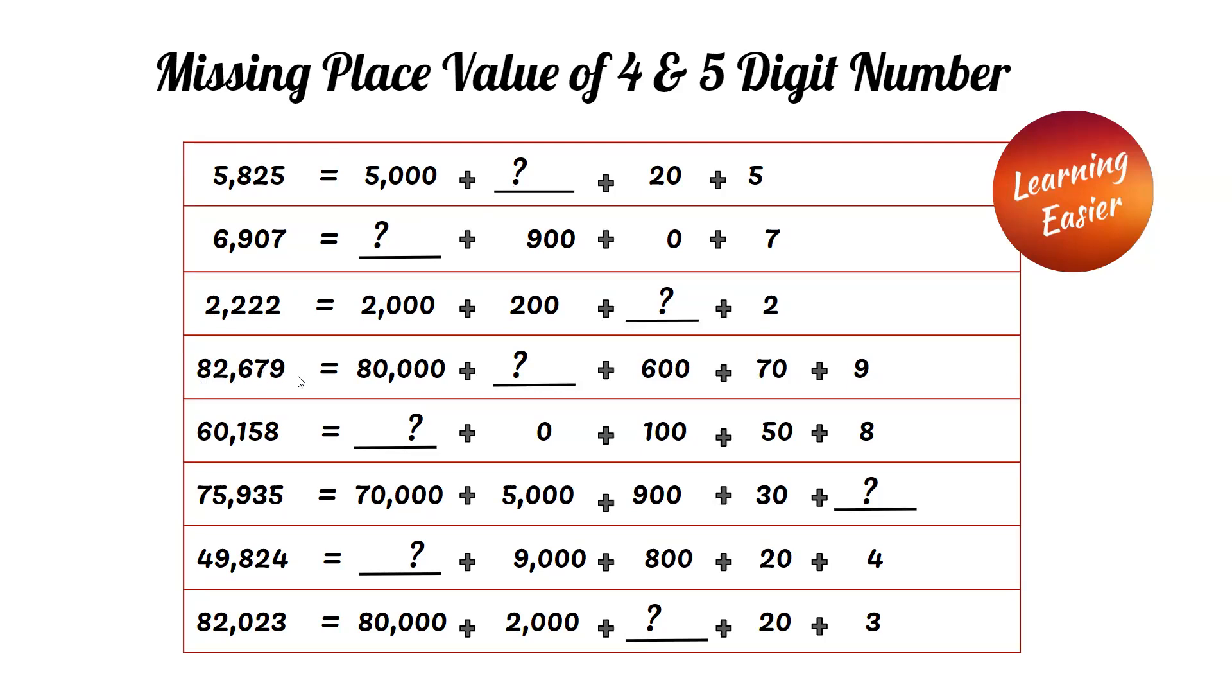82,679. The two in the thousands place is 2,000, so two thousands is the correct answer. 60,158. 60,000 is the correct answer.